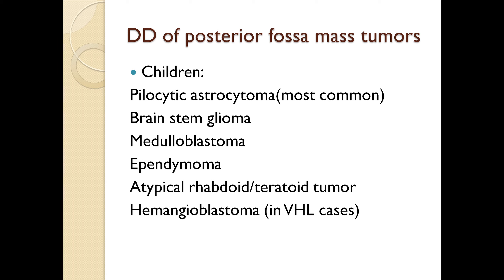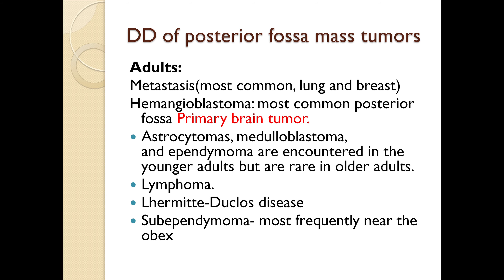Now, what is the differential diagnosis of posterior fossa mass tumors in children? The most common tumor is pilocytic astrocytoma, followed by brainstem glioma, medulloblastoma, ependymoma, and atypical rhabdoid or teratoid tumors. In children, if hemangioblastoma is seen, it is most commonly associated with von Hippel-Lindau syndrome. A mnemonic to remember this differential list is BIM. In adults, the most common differential is metastasis, generally from the lungs or breast, and hemangioblastoma is the most common primary posterior fossa tumor.